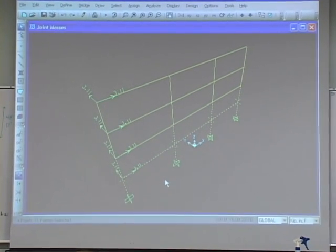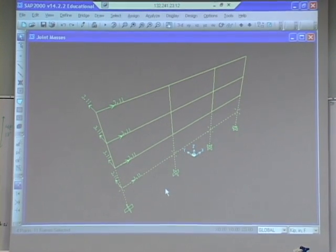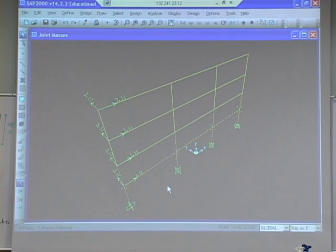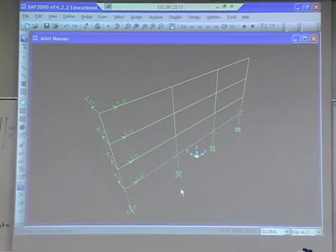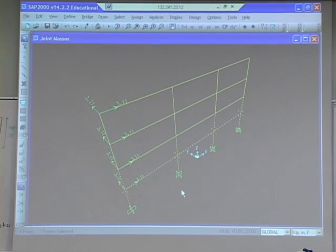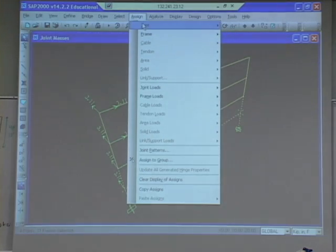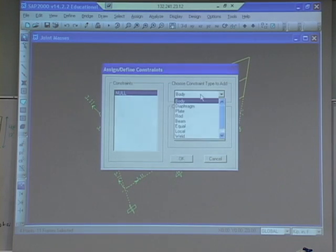So I've selected all the nodes here on floor one and I'm going to assign a constraint to this, and that basically reflects the fact that a slab's there and the slab is not going to let those nodes move with respect to one another. They all have to move together. Now this is a bit important for a 2D frame but it's not as important as for a 3D frame. For a 3D frame it's more important that we enforce this slab constraint.